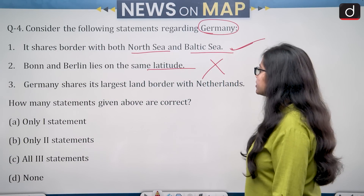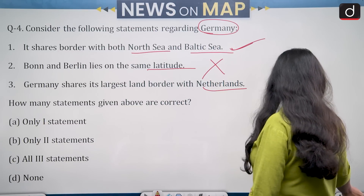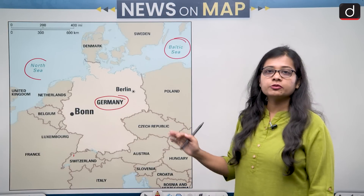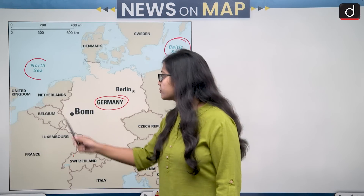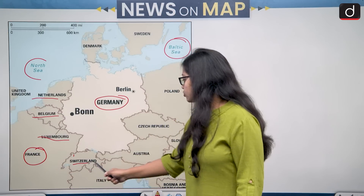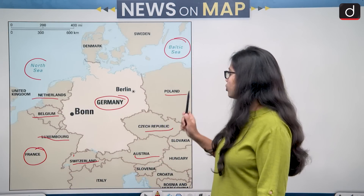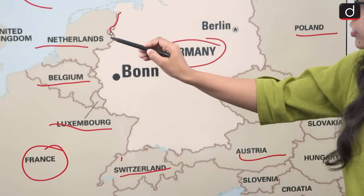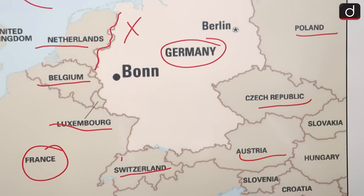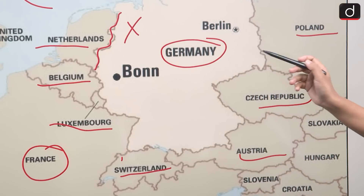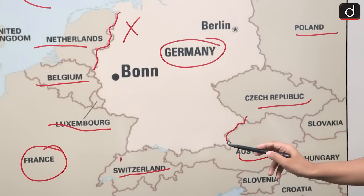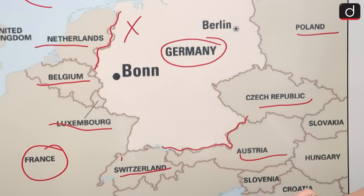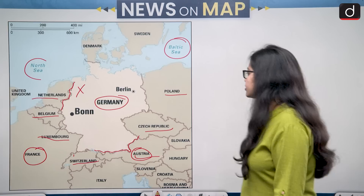The third statement says Germany shares its largest land border with Netherlands. Germany is surrounded by Netherlands, Belgium, Luxembourg, France, Switzerland, Austria, Czech Republic, and Poland. Looking at the map, Germany does not share its largest land border with Netherlands — it does share a border with Netherlands, but not the largest. Germany's largest land border is with Austria, at more than 700 kilometers. So this statement is also wrong.